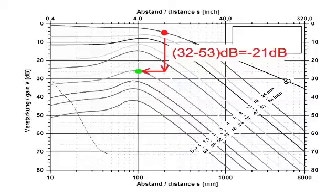Starting at our back wall reference point on the diagram, we must move down 21 dB and then across to a depth of 100 mm since this is the depth that we measured on our discontinuity echo.